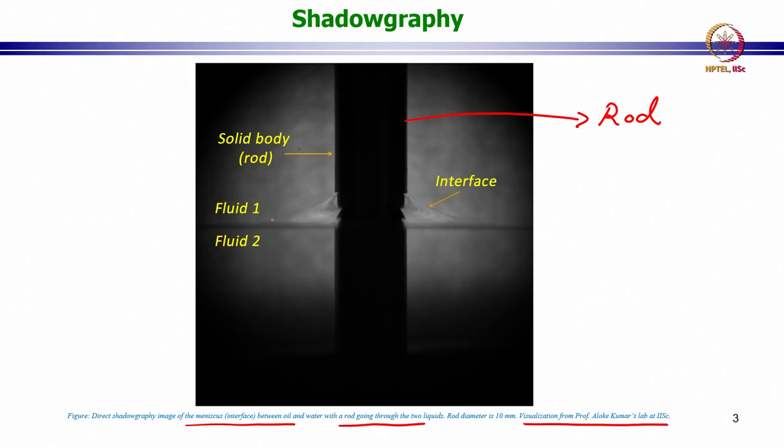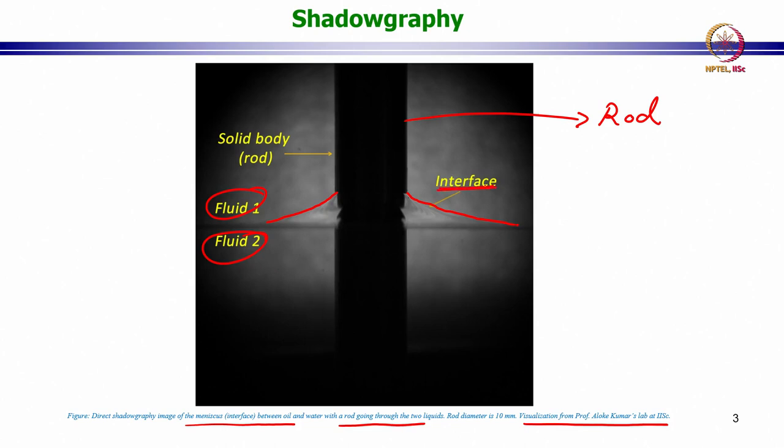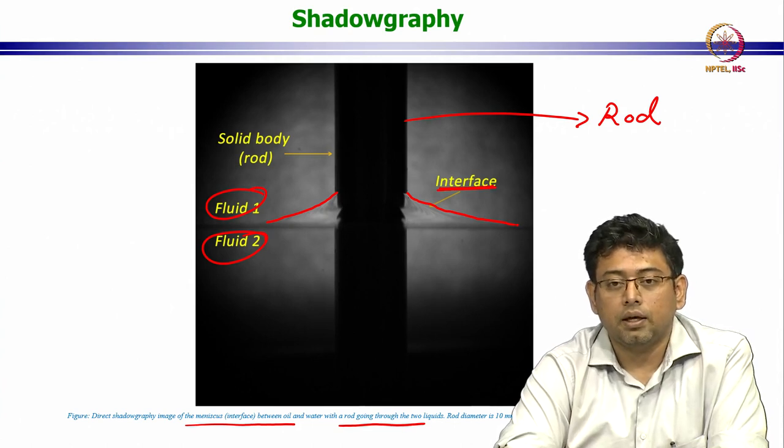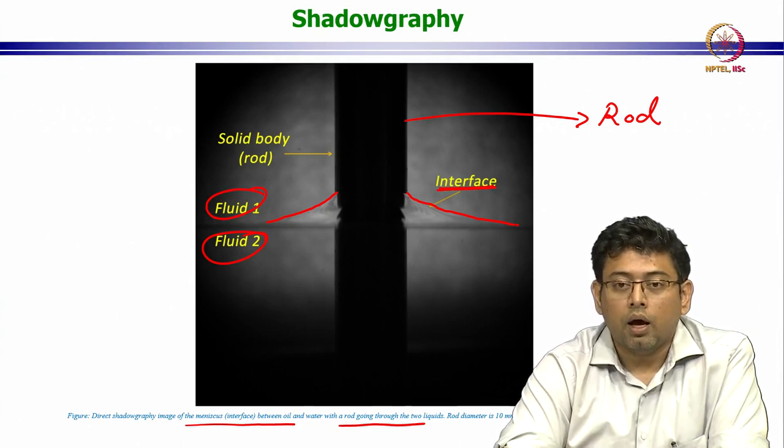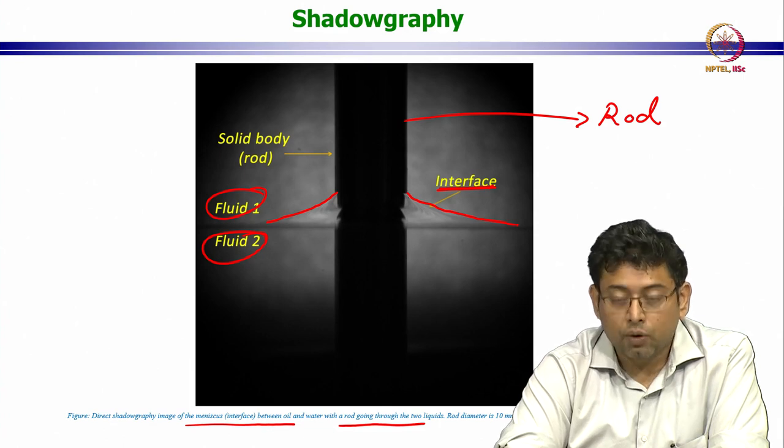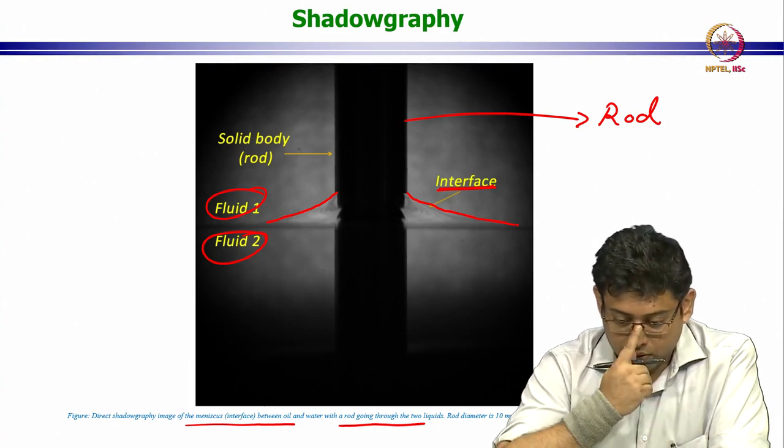You can see that there are two fluids. The upper one is fluid 1, the lower one is fluid 2, and there is a very small amount of difference between refractive index between the two. But when you have the meniscus, the interface is very clearly visible in this particular case. The interface can be clearly seen, and deformations of the interface can also be clearly seen during the experiment, which provides qualitative insight into the deformation.